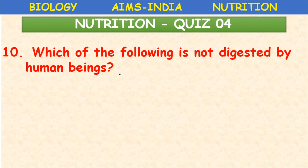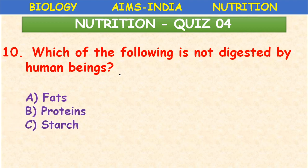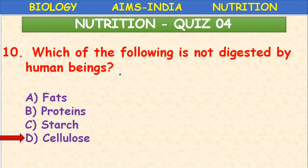Which substrate is not digested by the human digestive system? Cellulose is the polysaccharide not digested by humans. It is present in plant food materials. To digest cellulose, the enzyme cellulase is required, which is not produced in our digestive system. In ruminants, cellulase is produced by intestinal bacteria and flagellated protozoans in a symbiotic association. In humans, cellulose remains in undigested food and is eliminated.